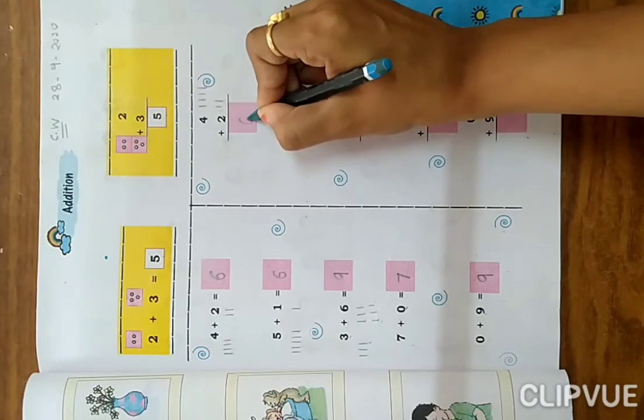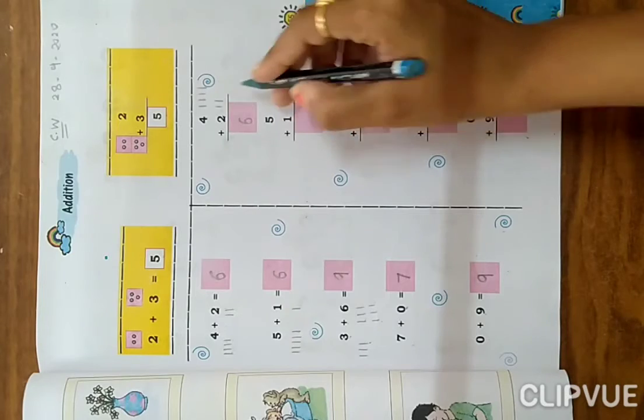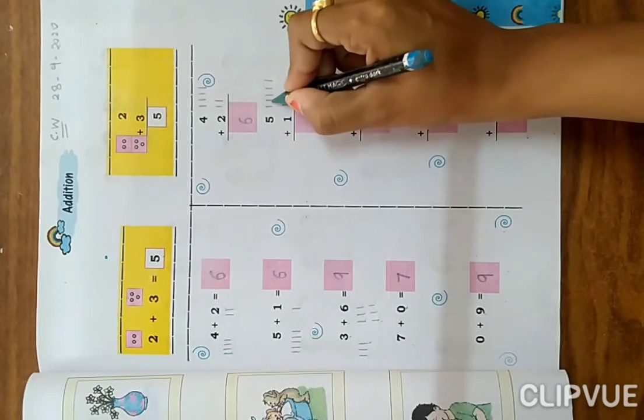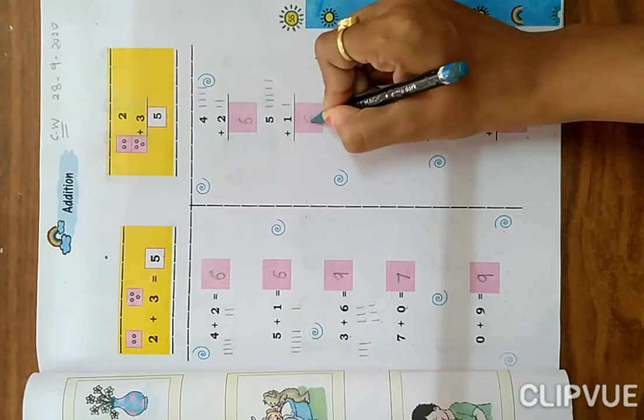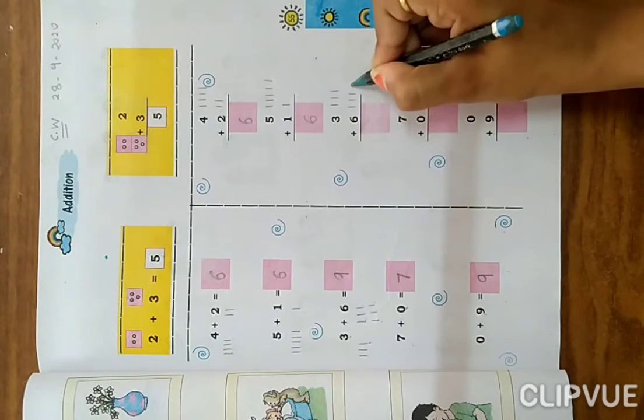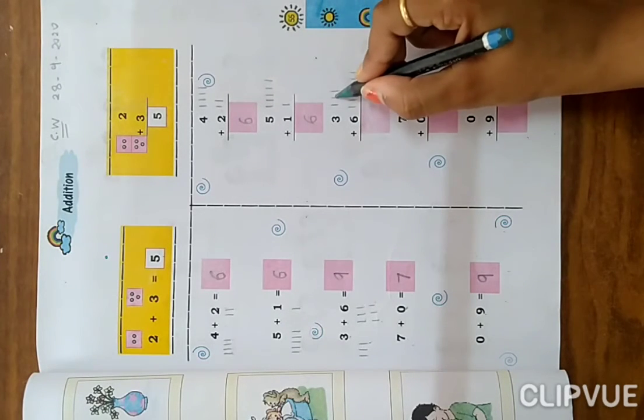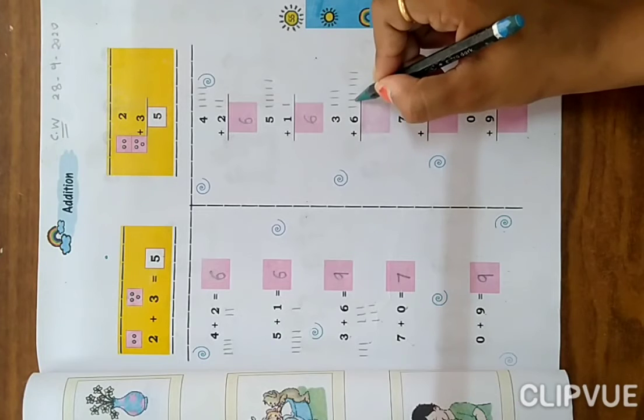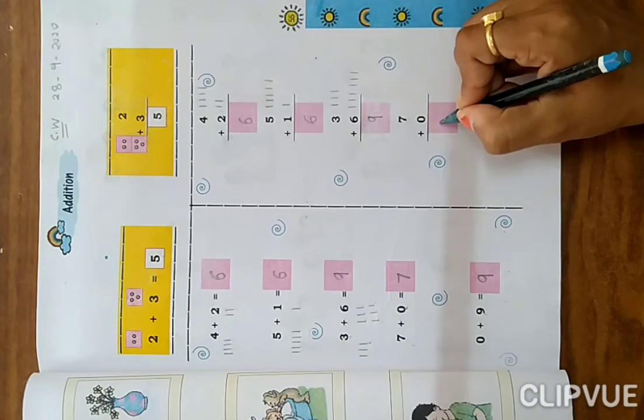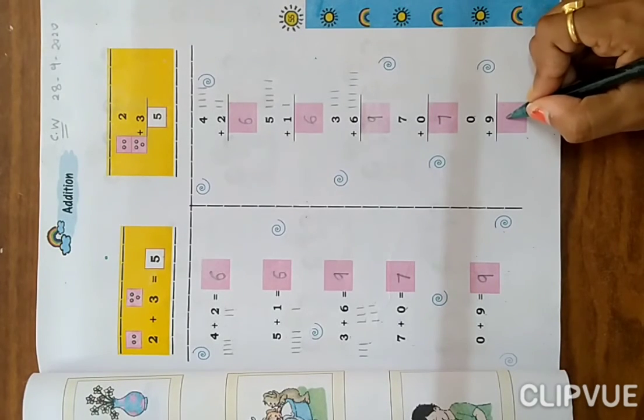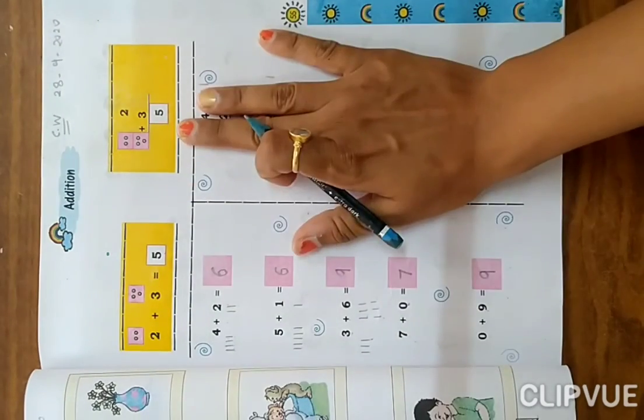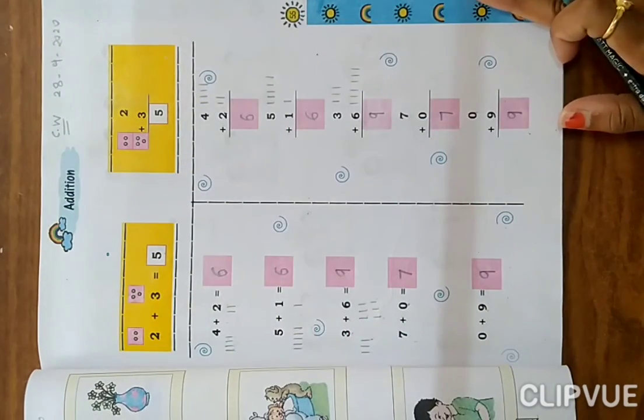4 plus 2: one, two, three, four, and one, two, so count all together, six. 3 plus 6 is 9. 7 plus 0 is 7. 0 plus 9 is 9. Understand? This is the addition. Thank you.